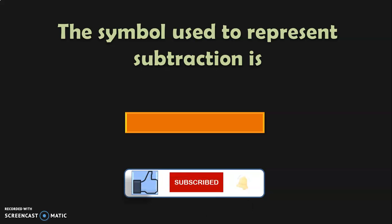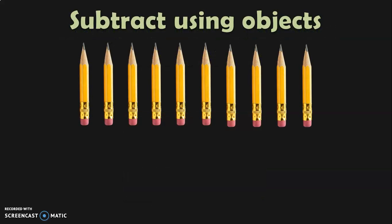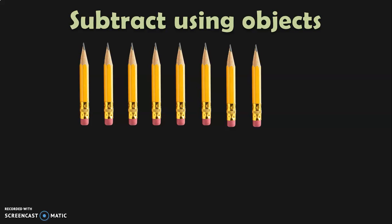Let us go through each and every concept of subtraction that you have learned in class 1, now here in class 2 as a revision with sufficient examples. First let us begin with subtract using objects. You had 10 pencils with you. You give away 2 pencils to your friend. So how many pencils do you have now?